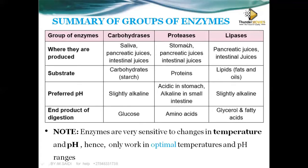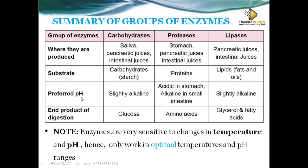The second category is proteases, which digest proteins. Protein digestion occurs in the stomach, the duodenum via pancreatic juice, and in the small intestine. The substrate is proteins. Proteases can work in both acidic medium (in the stomach) and alkaline medium (in the small intestine). The end product of protein digestion is amino acids.